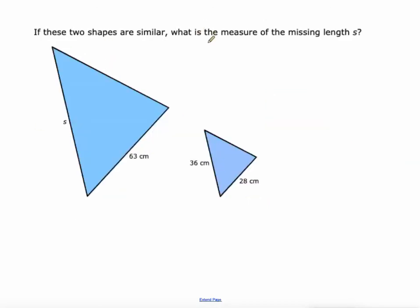All right, these two shapes are similar. Find the missing side of S here. Okay, well S is this side and I believe it corresponds with this 36 centimeters over here. So we'll say S is to 36 as, and then we'll grab two other sides here. 63 corresponds to the 28. 63 is to 28.